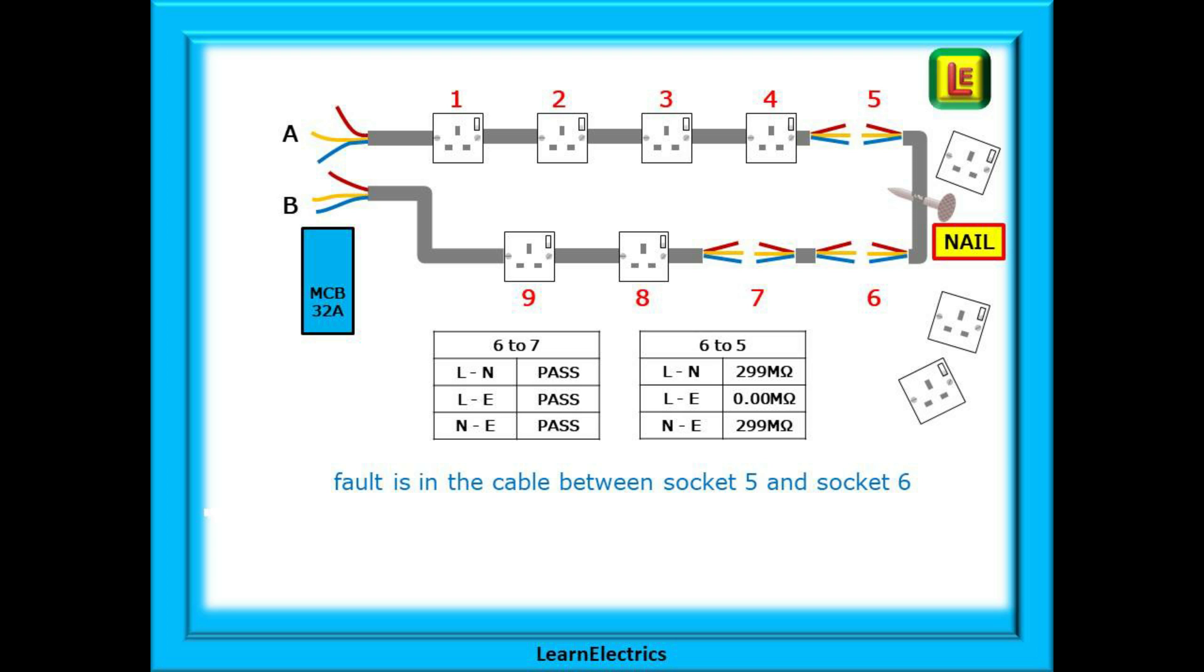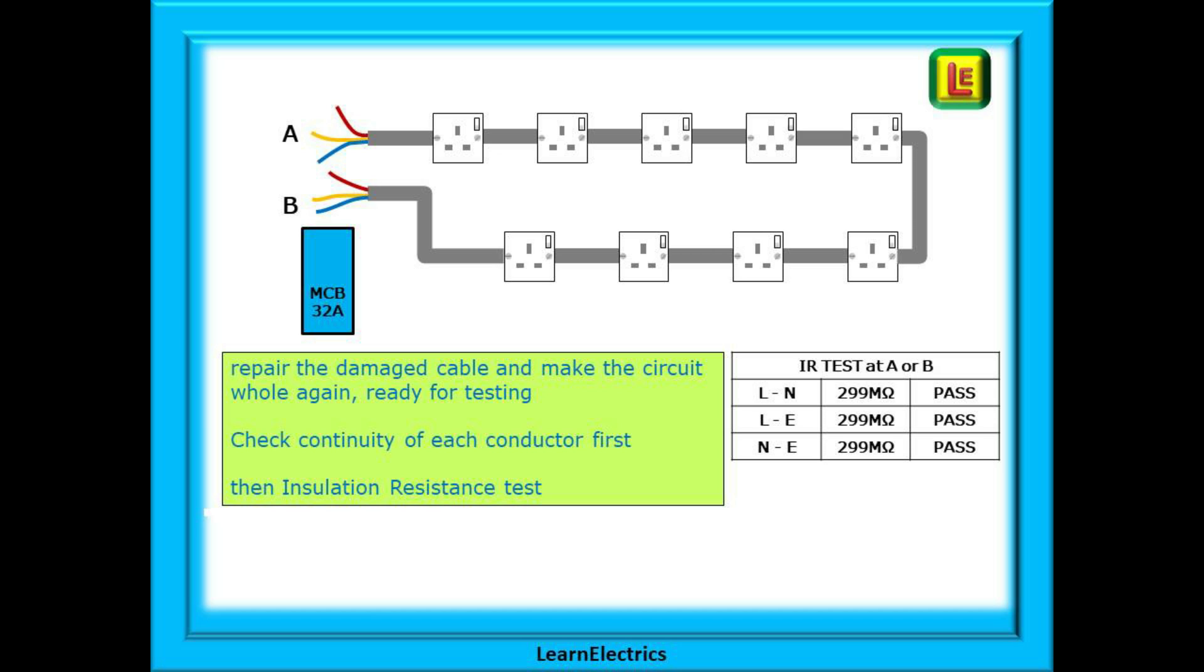And sure enough, when we investigate further, there is the nail in the cable that's causing the problem. All we need to do now is to remove or repair the damaged cable and make the circuit whole again and prepare it for testing one last time. It is always a good idea to do end-to-end continuity tests first and then follow this with the insulation resistance test. Complete the testing, complete any certification, and hand back to the customer.